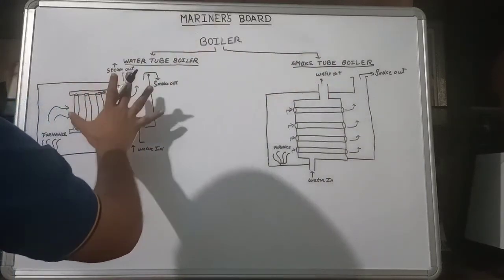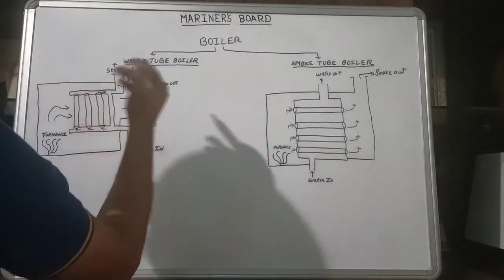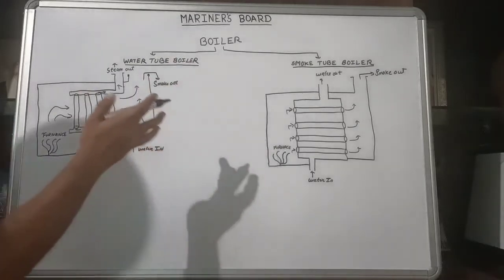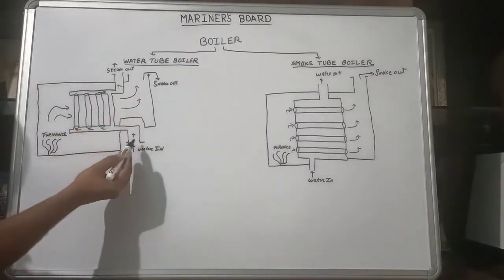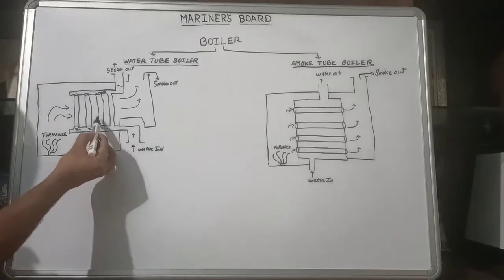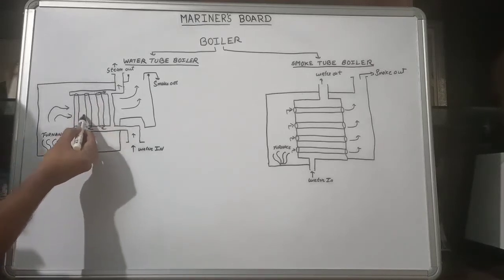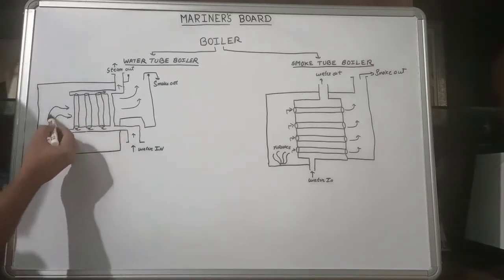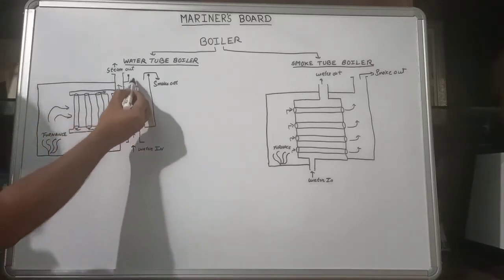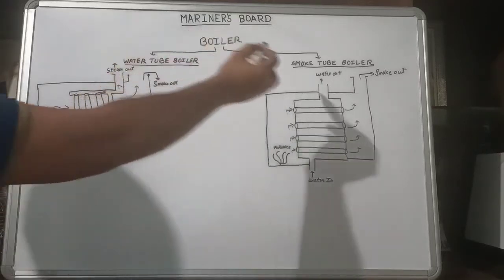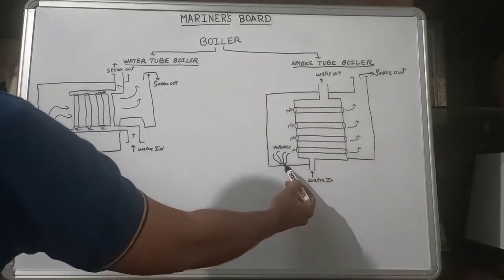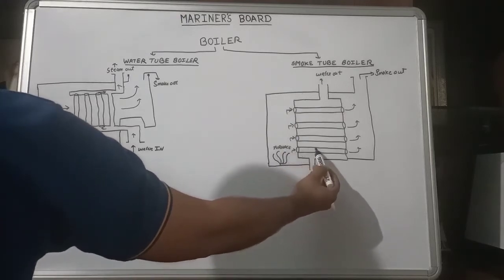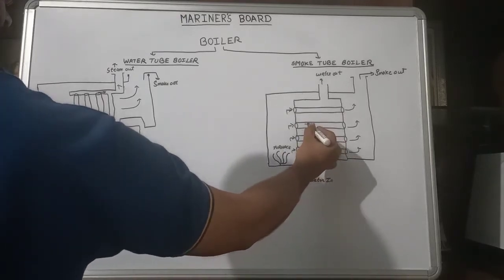The basic difference between smoke tube and water tube boilers is: in a water tube boiler, water circulates inside the tubes and hot flue gases are outside the tubes. In a smoke tube boiler, the hot flue gases are inside the tubes and water is outside.